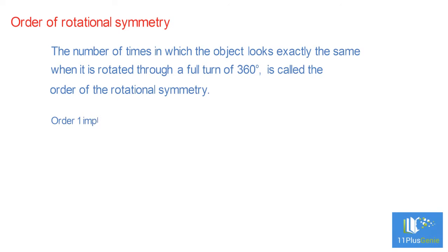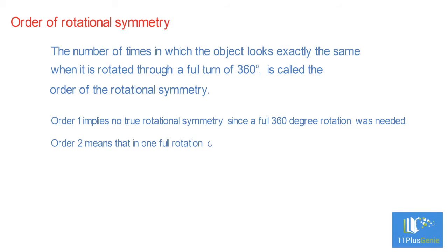Order one implies no true rotational symmetry since a full 360 degree rotation was needed. Order two means that in one full rotation of 360 degrees the object looks twice exactly the same.